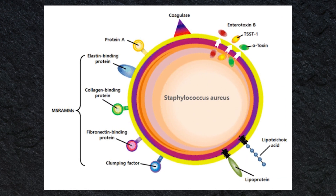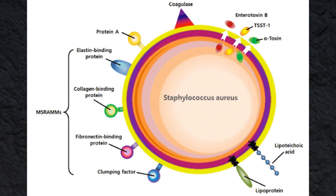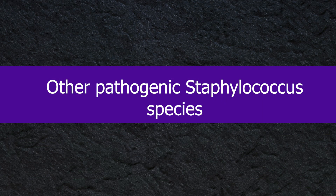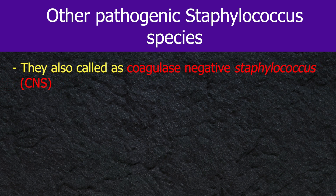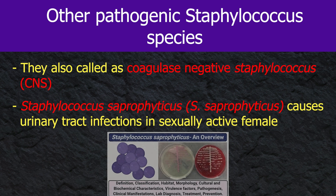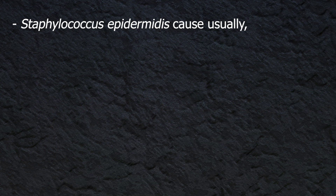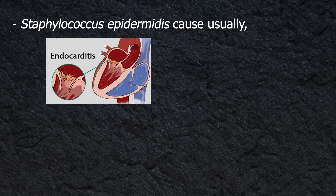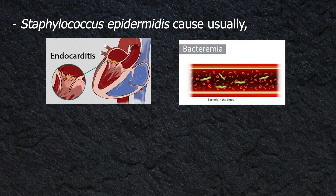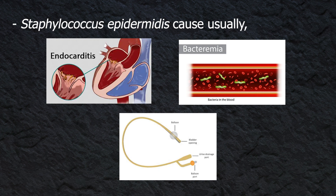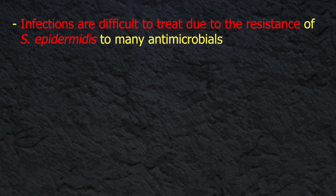Several latex agglutination test kits have been developed to identify S. aureus based on the detection of clumping factor and protein A. Other pathogenic staphylococcus species, also called coagulase-negative staphylococci (CNS): Staphylococcus saprophyticus causes urinary tract infections in sexually active females. Staphylococcus epidermidis causes subacute endocarditis and bacteremia following infection of cannulas, indwelling catheters, shunts, or other appliances positioned in the body. These infections are difficult to treat due to the resistance of S. epidermidis to many antimicrobials.